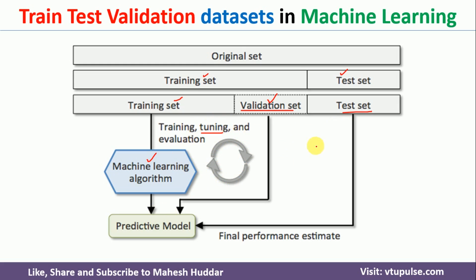But in both these techniques, what we do is take one part of the data for training, another part for validation, and a third part for testing. If you follow this approach, there is a bias in the model because certain parts of the data are used for training, certain parts for validation, and the remaining for testing. So the model is not trained or tested with the entire data's representation. Because of that, the model may go into something called an overfitting state.